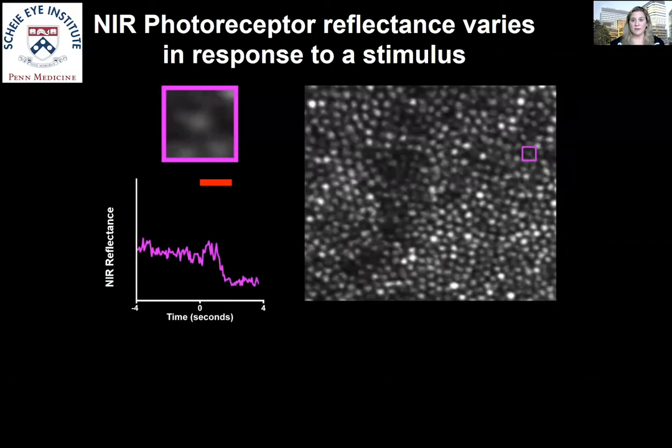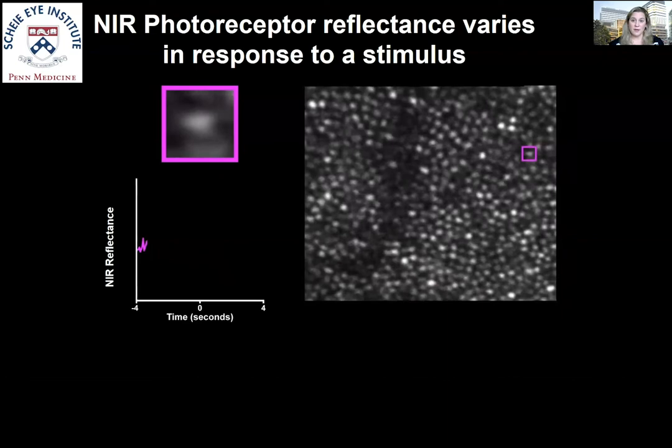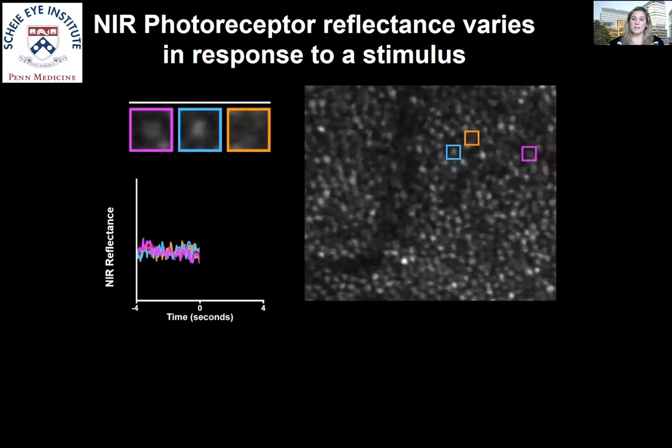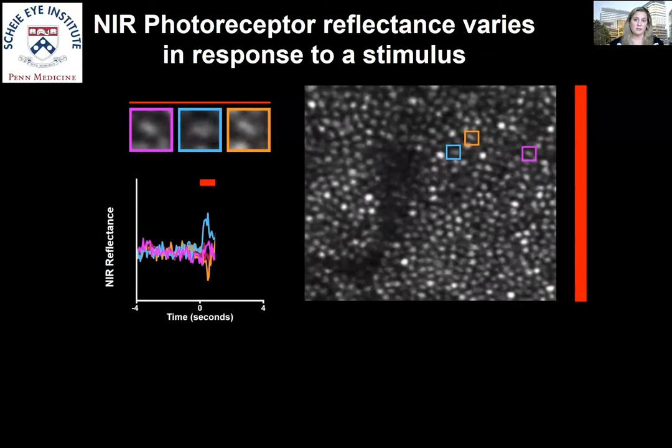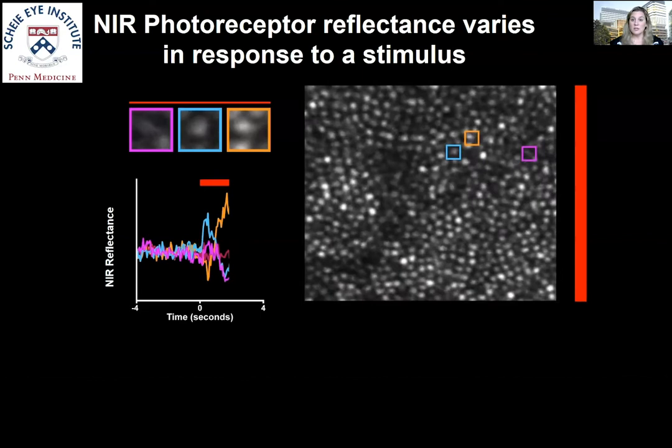Looking at a second cone, we see that its reflectance decreases in response to the stimulus. Indeed, if we look at each cone throughout the image, we find that each cone has its own unique reflectance trace and that the signal is highly heterogeneous across cones.